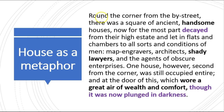Let's explore further how the house is a metaphor for duality of man and Jekyll and Hyde by looking at the actual description. 'Round the corner from the by-street there was a square of ancient handsome houses' — that's Leicester Square as you've seen — 'now for the most part decayed from their high estate and let in flats and chambers to all sorts and conditions of men: map-engravers, architects, shady lawyers, and the agents of obscure enterprises.'